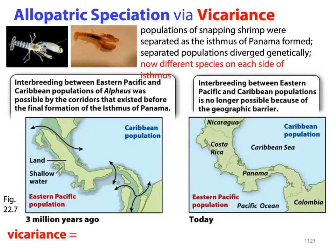One real-life example of allopatric speciation through vicariance: three million years ago, there was interbreeding between Eastern Pacific and Caribbean populations because water flow allowed shrimp to move back and forth. However, today that was closed off — sea levels dropped and land bridges formed. Now there's a separation and they've definitely become two distinct species.